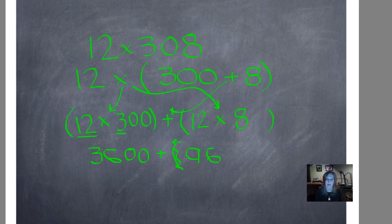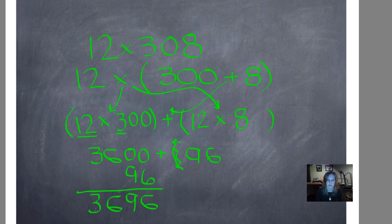12 times 8 is 96, and now I can just add these two. I'm just going to write it like this: 0 plus 6 is 6, 0 plus 9 is 9, 6 plus 0 is 6, and 3 plus nothing is 3. Because you all like to see me put my commas in there — 3,696. We could check that by multiplying it the normal way too.